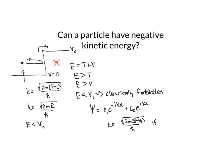then if E is less than V₀, so I'm in this classically forbidden region, then we're going to have an imaginary k.